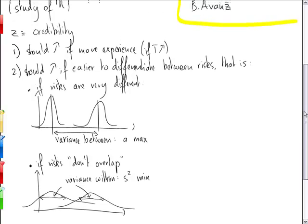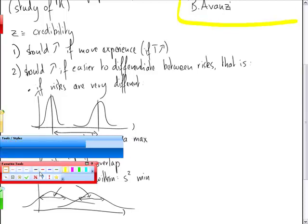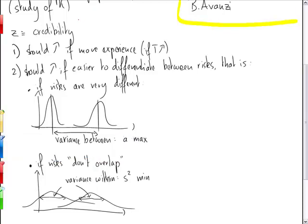Z in the Buhlmann model is T over T plus K. And that's also T over T plus S squared over A. And this is AT over AT plus S squared.